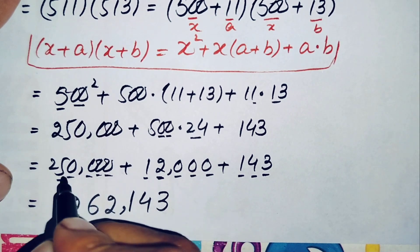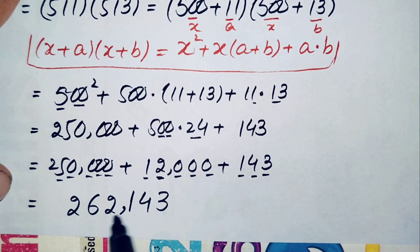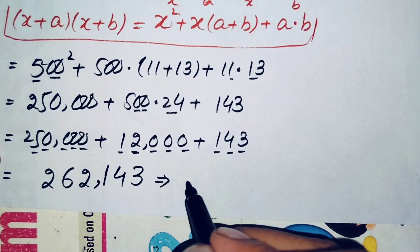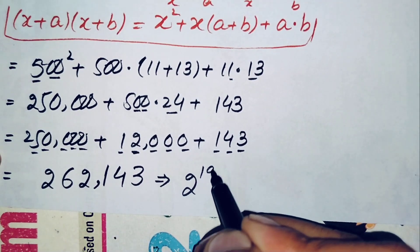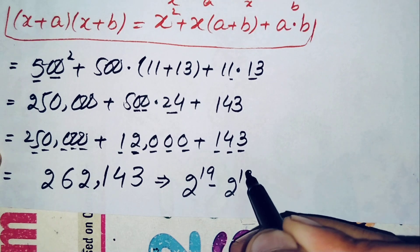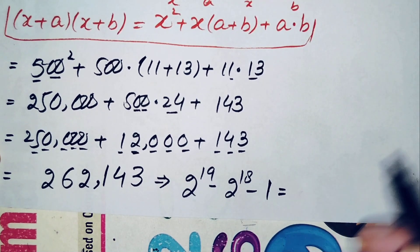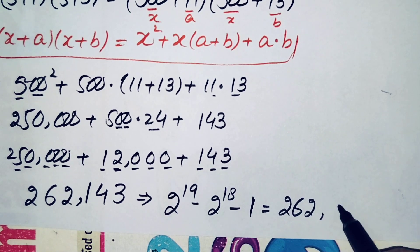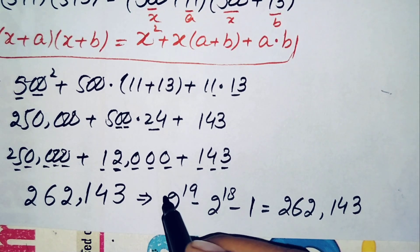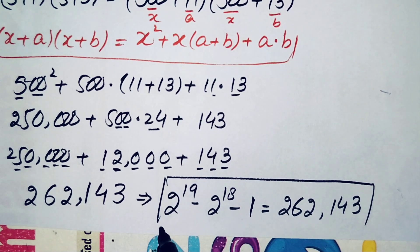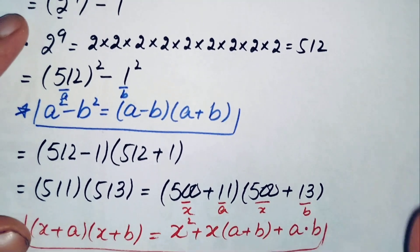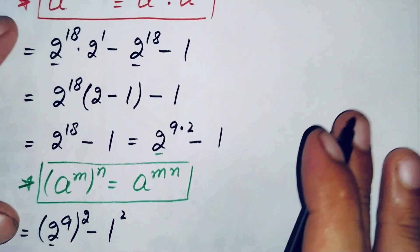So the value of 2 raised to power 19 minus 2 raised to power 18 minus 1 is 262,143. This is our target and this is our solution. If you like this video, don't forget to subscribe to my YouTube channel. Thanks for watching.